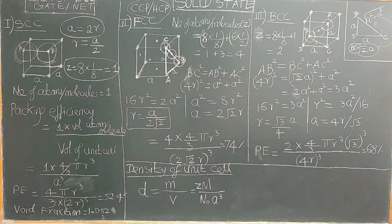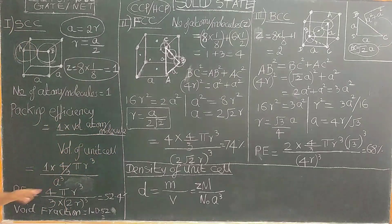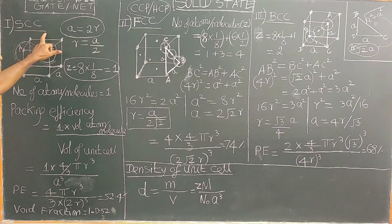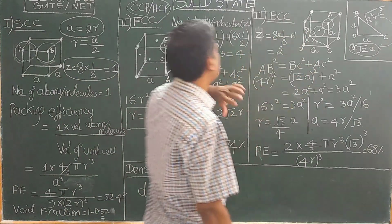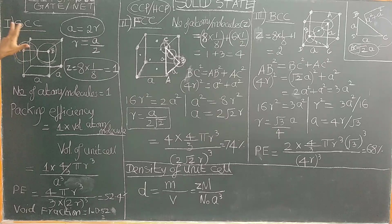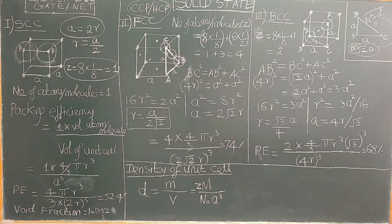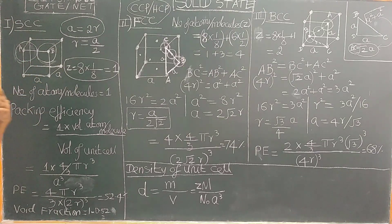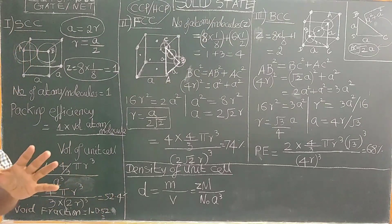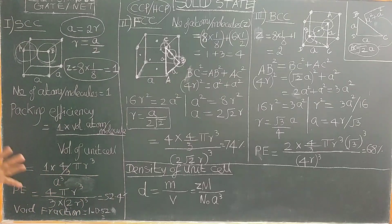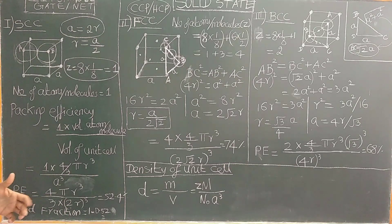Let us now first come to simple cubic lattice. For cubic lattice, there are three types of Bravais lattice. The first is simple cubic lattice, which consists of atoms at the corners of the cube. In order to understand solid state physics, you need to have some imagination and think a little bit.